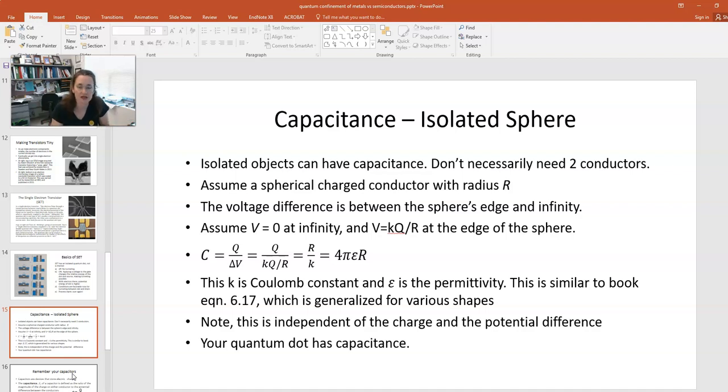So we're going to assume that our little quantum dot is a little sphere. Now, it doesn't have to be a sphere. It changes the formula for the capacitance, but that's all. So if you assume that the voltage difference is between the sphere's edge and infinity, then your voltage is KQ over R at the edge of the sphere. Now remember K is your Coulomb constant, which is 8.99 times 10 to the ninth in SI units. It's also equal to 1 over 4π epsilon naught.